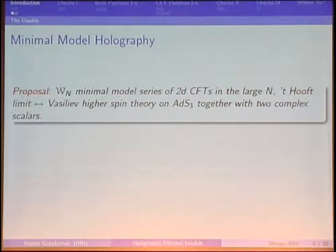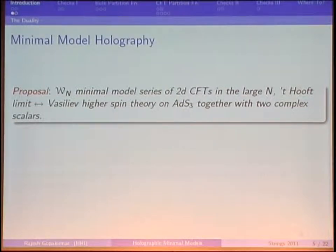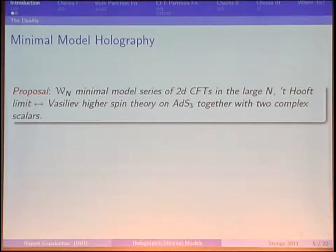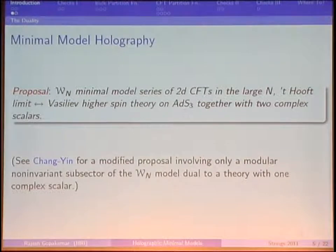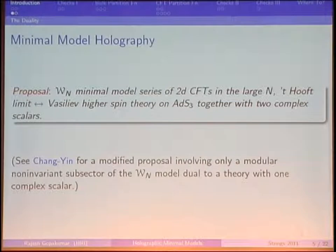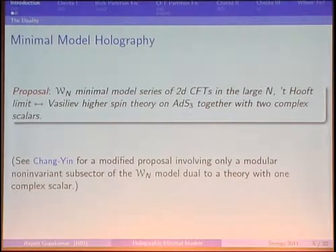The proposal to address these questions is in the context of a large-N family of two-dimensional CFTs: the so-called W_N minimal model series, considered in a 't Hooft-like limit. The proposal is that these are dual to Vasiliev-type higher spin theories on AdS_3 coupled to two complex scalars — there's a whole higher spin tower of spins starting from two. I would also refer you to a paper by Xi Yin and his student in which they proposed a truncation of this proposal to address some puzzles, which involves only one complex scalar.